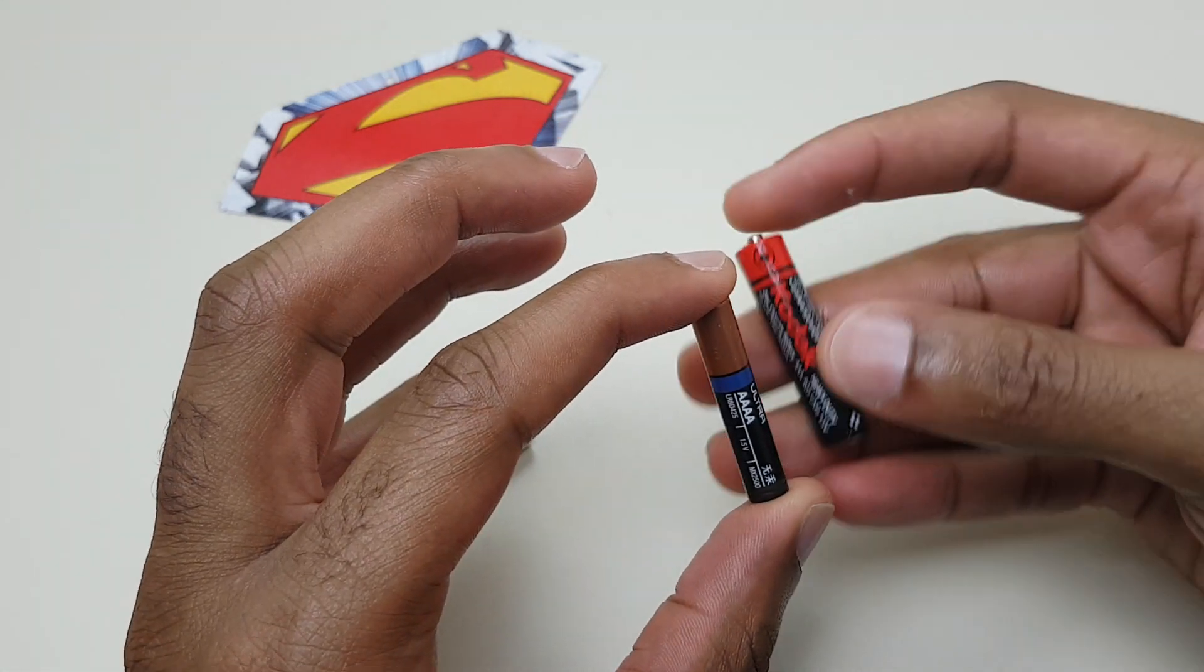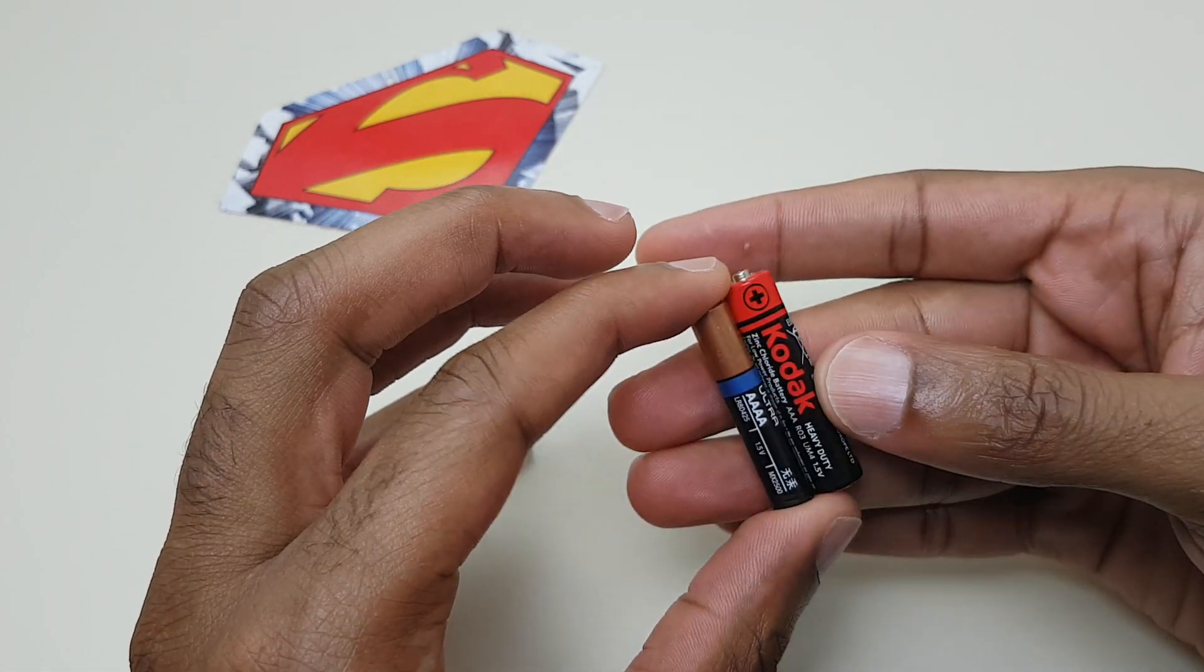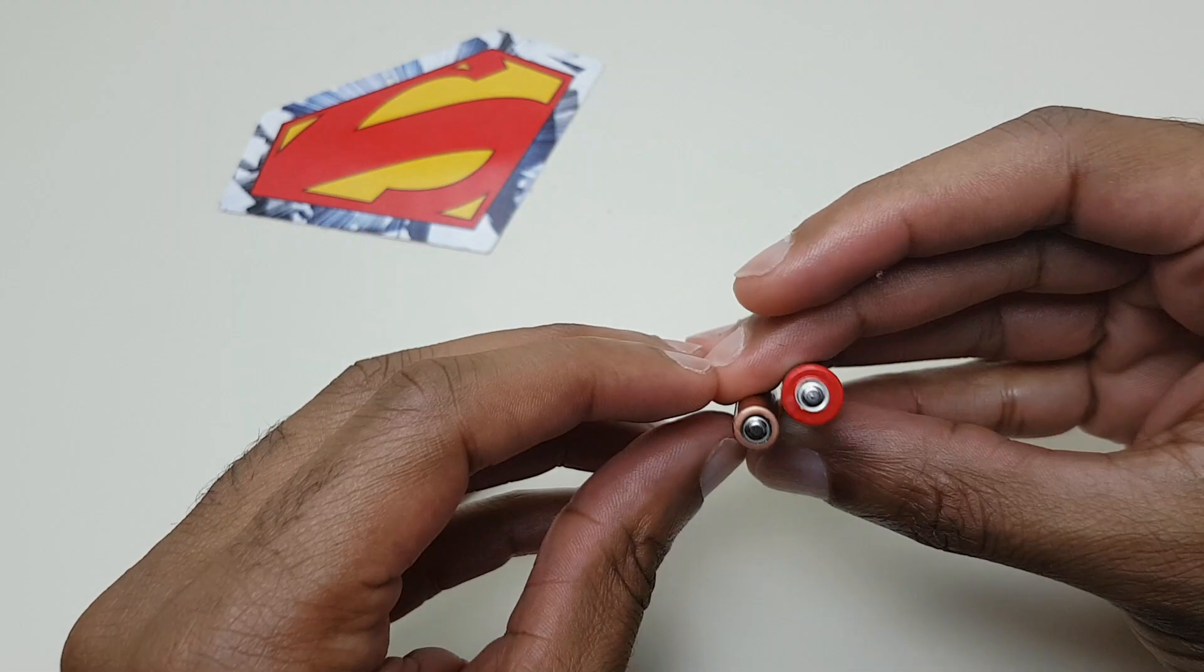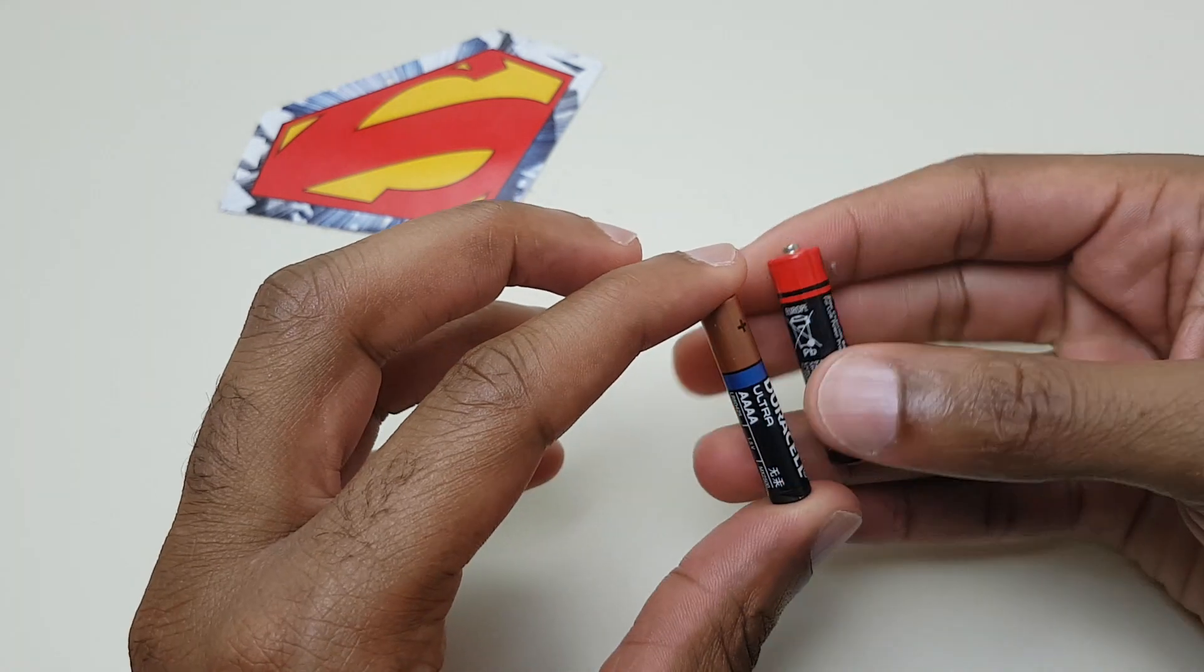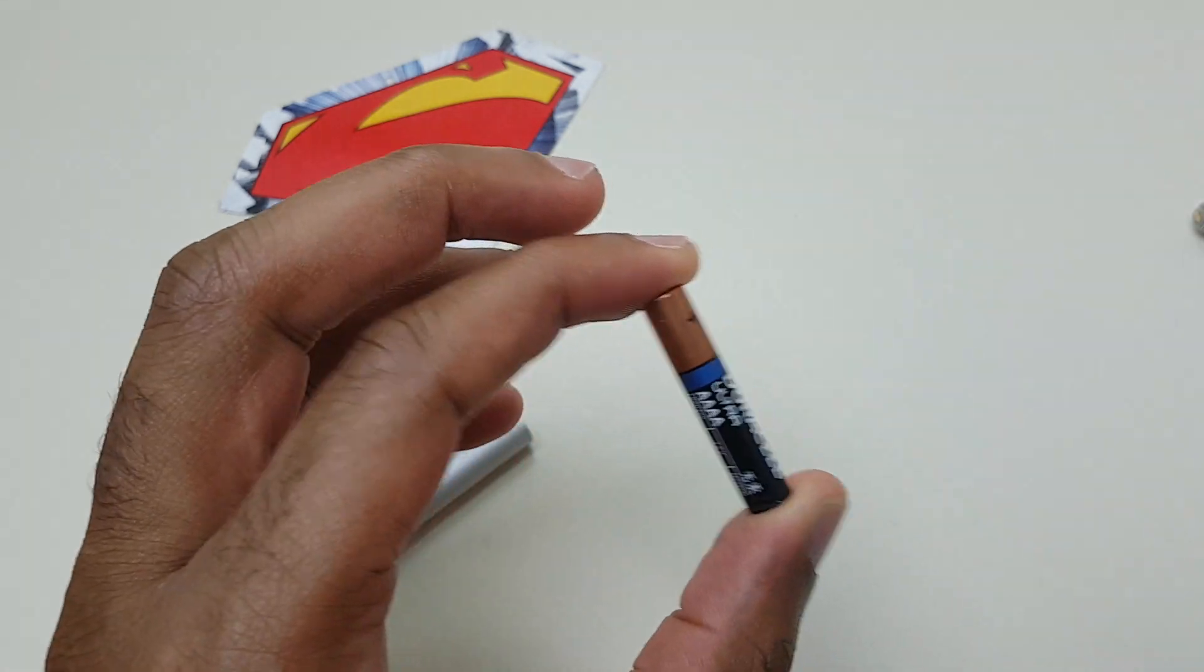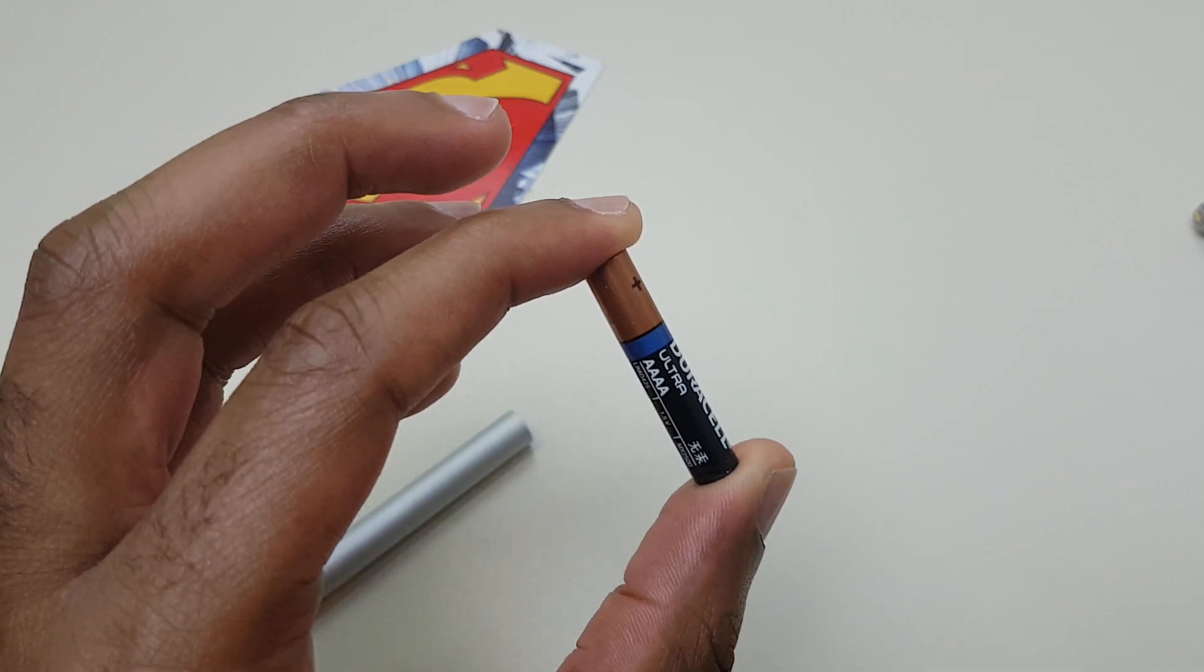Just to compare it, this is a triple A, this is what you are probably more familiar with. As you can see it's a lot smaller. So if you are going to order a replacement it's a quadruple A.